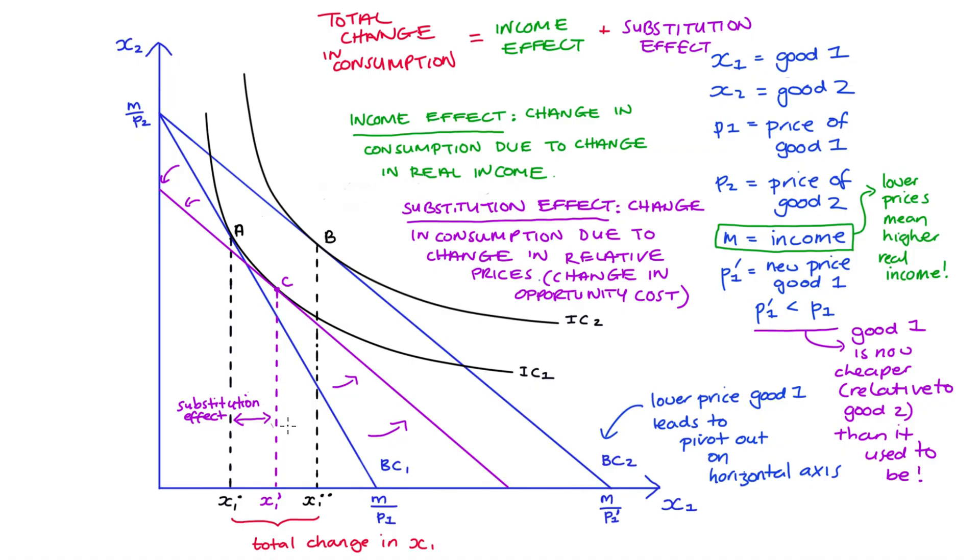Now this interim budget constraint is the same slope as our new budget constraint. To get the income effect we're going to shift out that interim until we get to our new. And once we're there we get to the new consumption bundle, that's bundle B. The difference between x1 prime and x1 star star is going to be our income effect. So that's the visual decomposition of our total change in consumption of good one into our income and substitution effect.